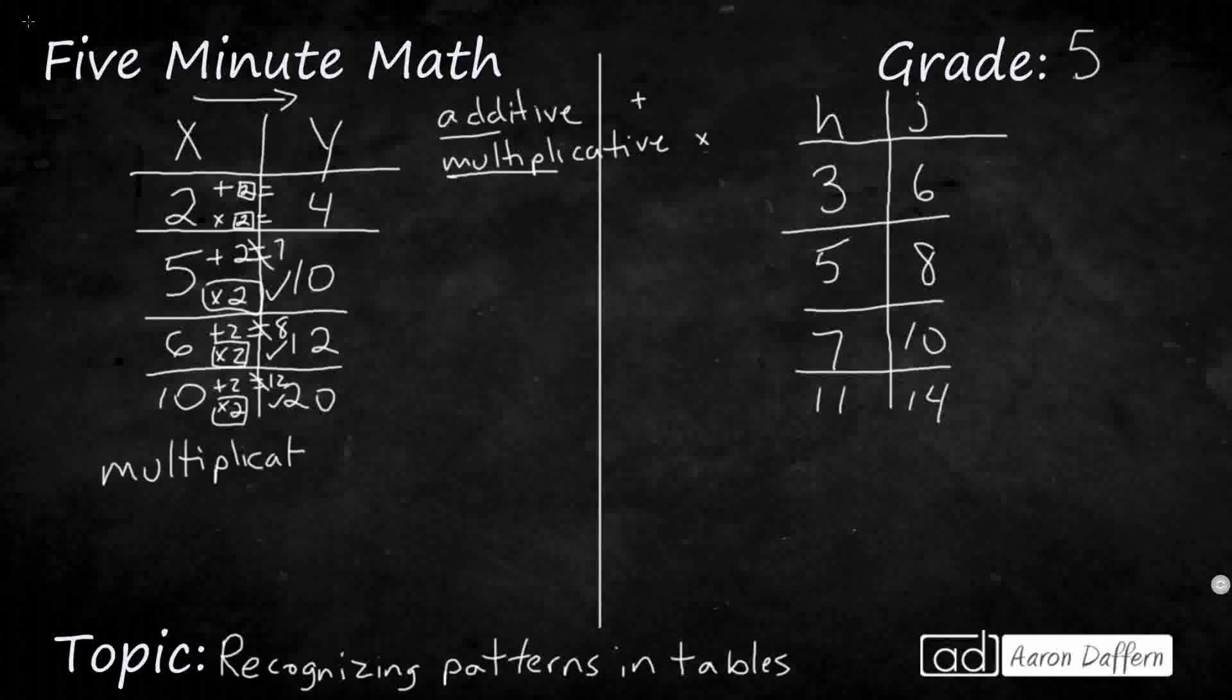We need to give a reason. Multiplicative relationship, because what you do is, to get the y, what do we have to do to that y value? You multiply, and that's why we need to put that into our justification, the x value, by, and then what is our multiplier? By 2. So it's a multiplicative relationship.